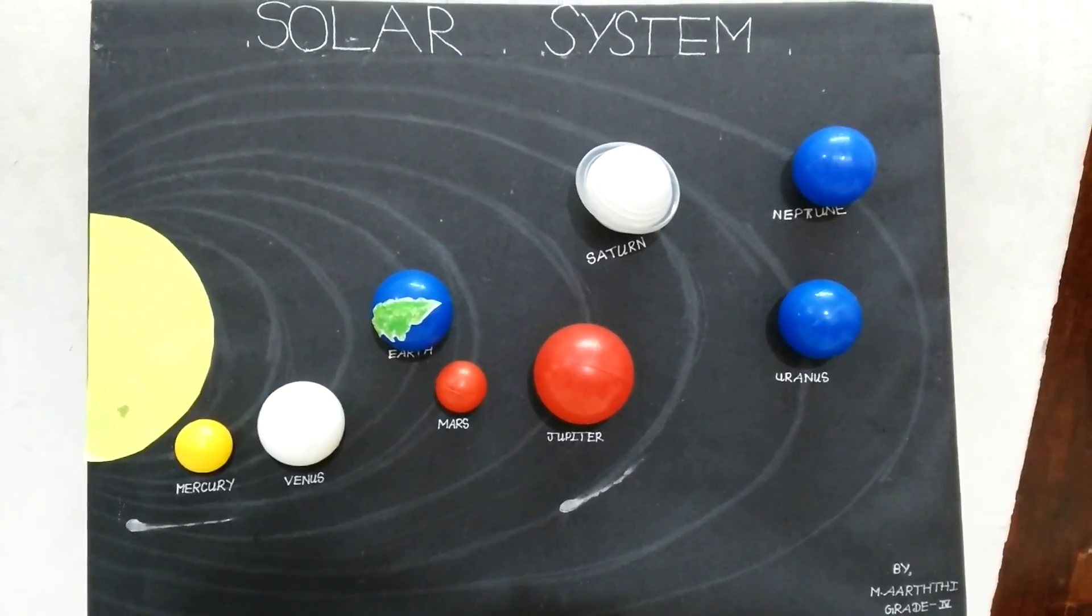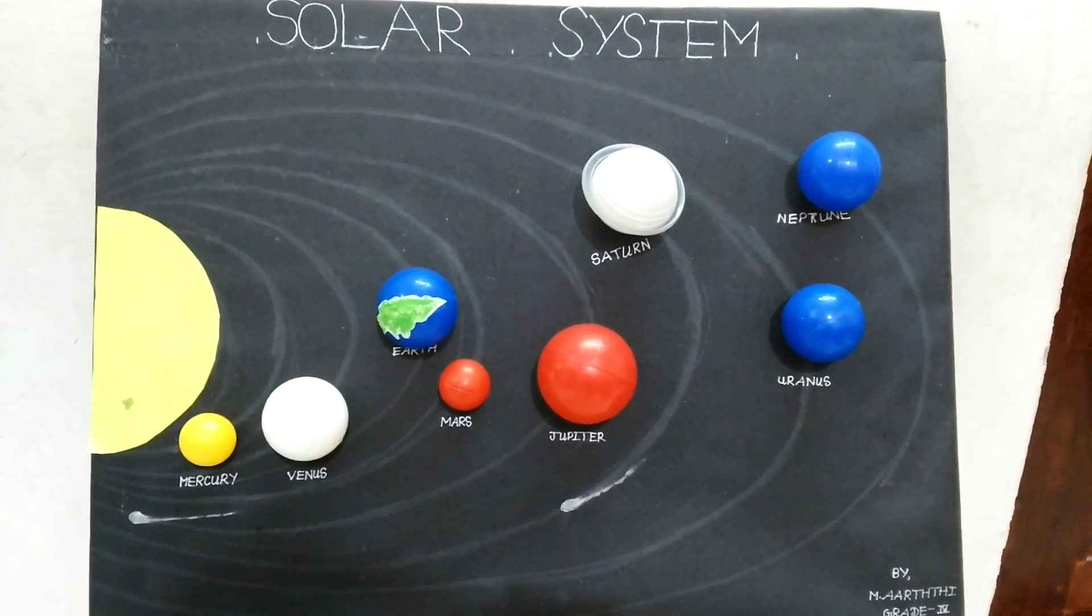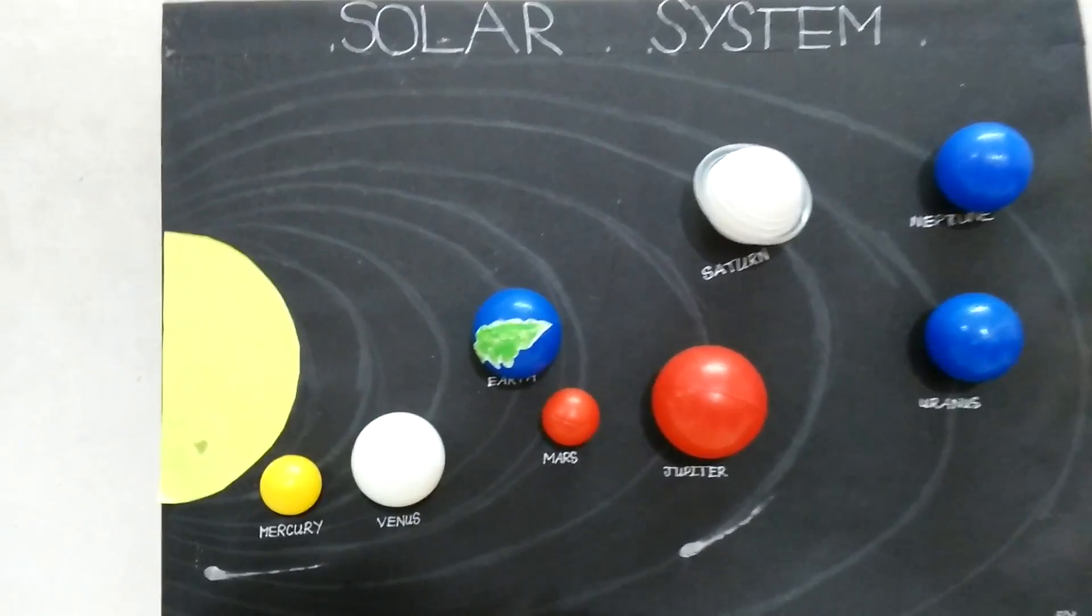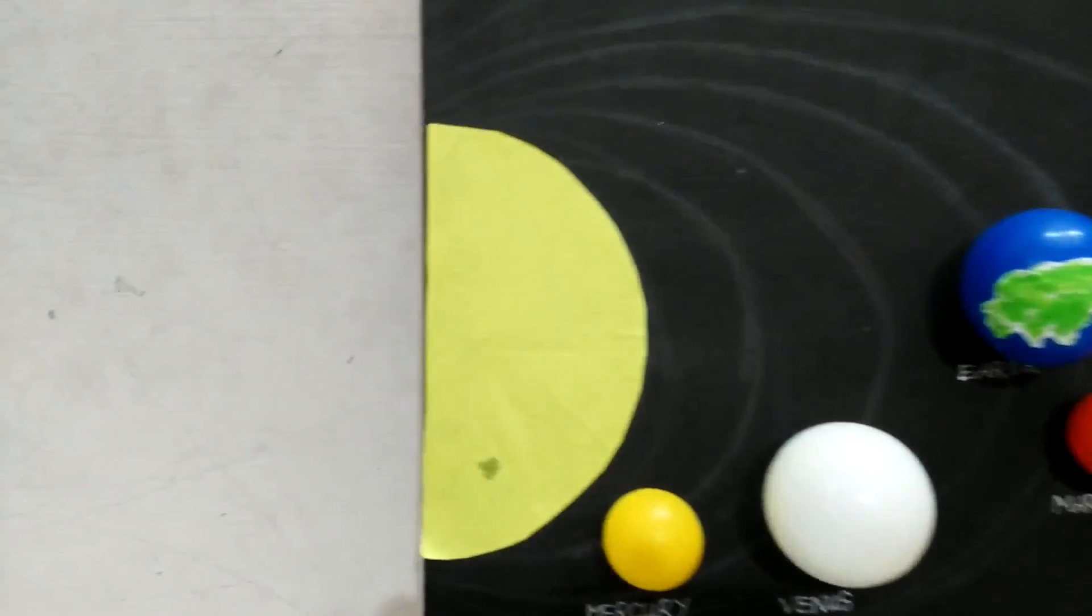I took a cardboard and covered it with black shark in front. Then I pasted half drawn sun. Round shape is drawn with the help of a plate.